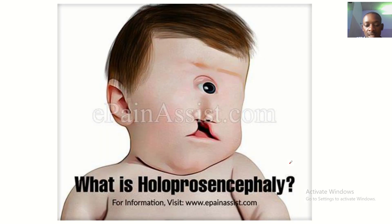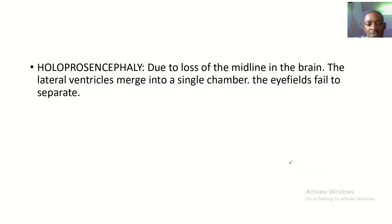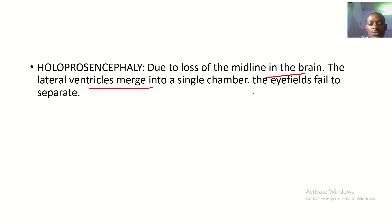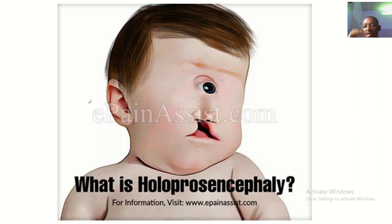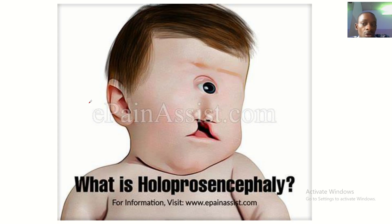How about holoprosencephaly? Holoprosencephaly is due to the loss of the midline in the brain. The lateral ventricles merge into a single chamber, and the eye fields fail to separate, making the individual have just one eye. These are very rare occurrences, but they do happen.